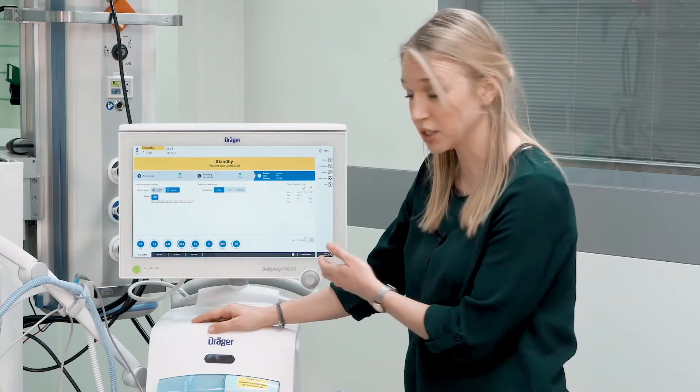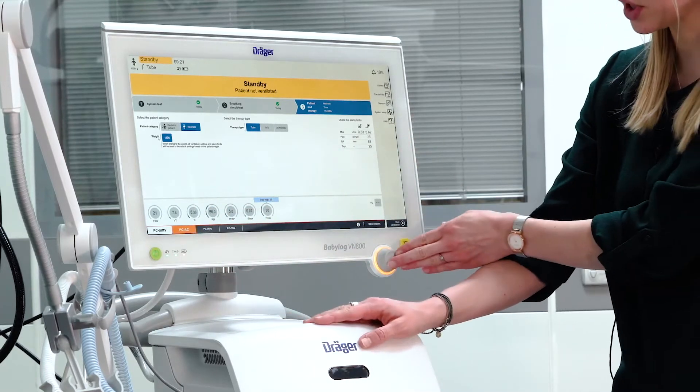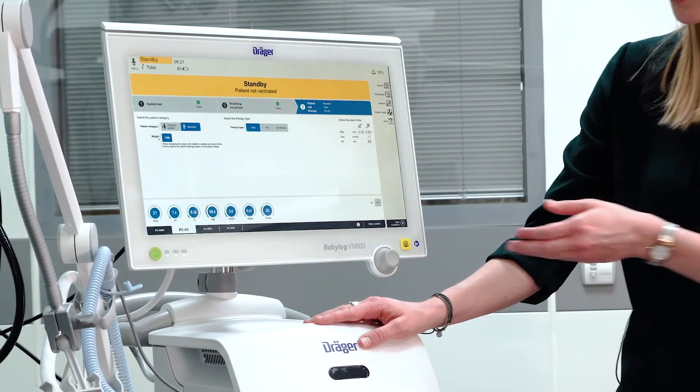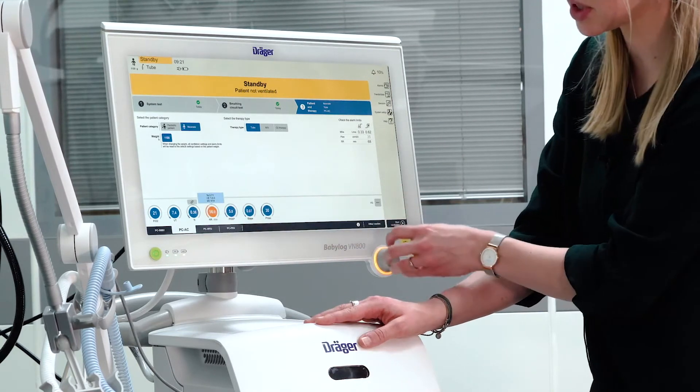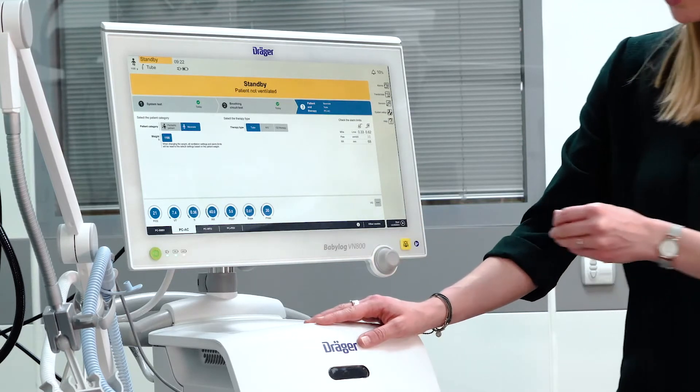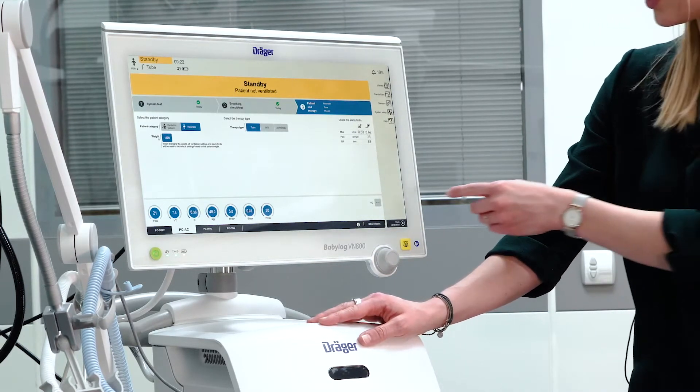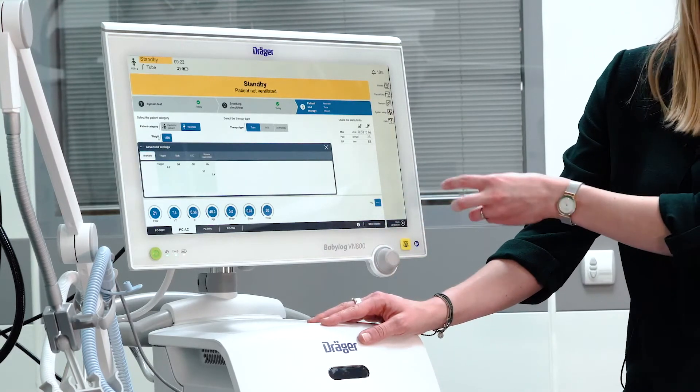If you want to start in a different ventilation mode, please select the ventilation mode and confirm by pressing the rotary knob. If you want to change specific parameters, select the specific parameter, turn it to the desired value, and confirm with the rotary knob. Further additional settings can be accessed via the three dots at the side.